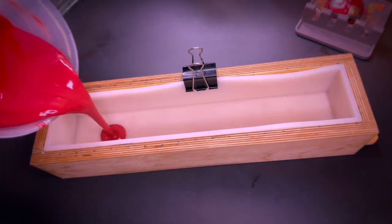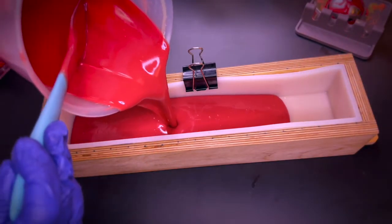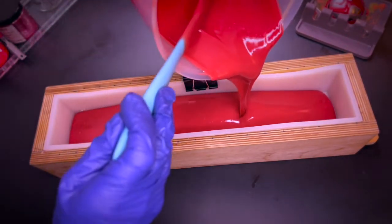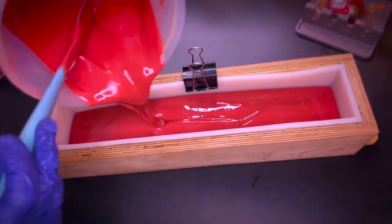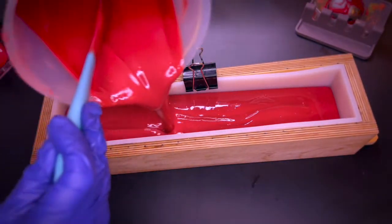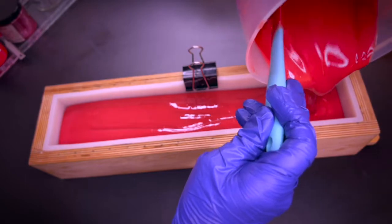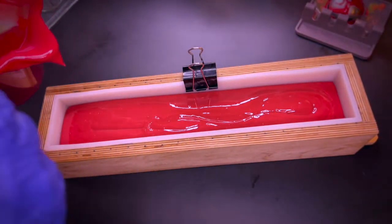Now we are ready for the pour. Here is the wooden mold with the silicone liner inside, ready to go. I'm pouring the entire red portion into the mold. And as you can see, it's already nice and thick.